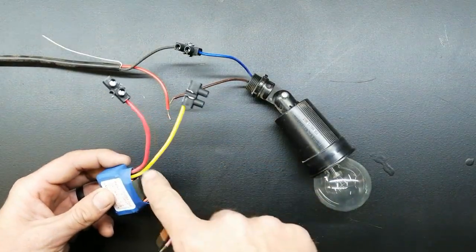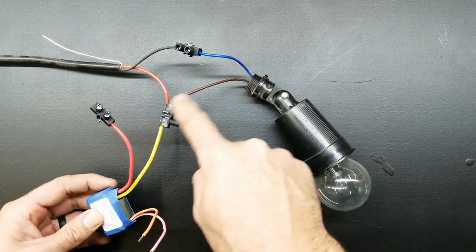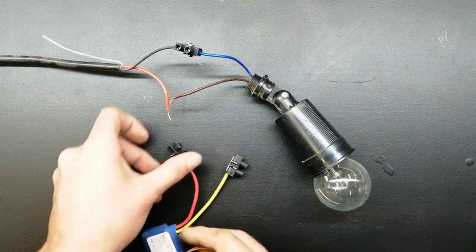With the dimmer, it's live in, live out - so live in from the supply side and then the output side that goes to the light fitting.